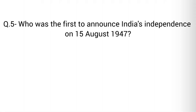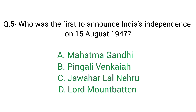Question No. 5: Who was the first to announce India's Independence on 15th August 1947? Right answer D — Lord Mountbatten.